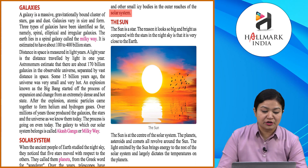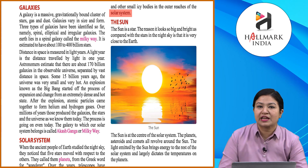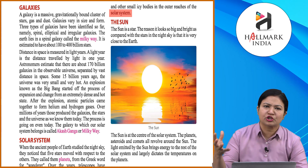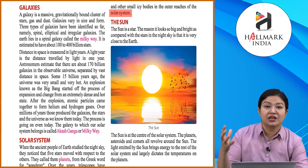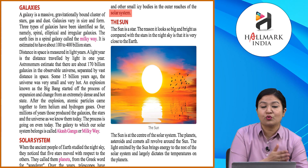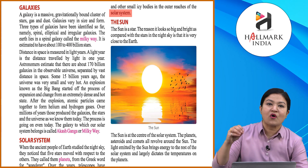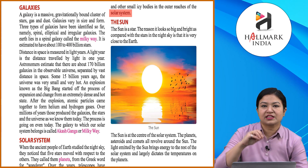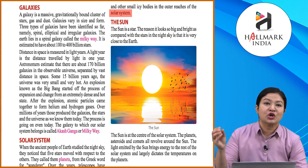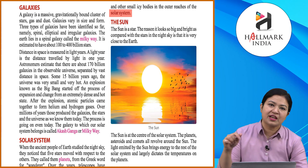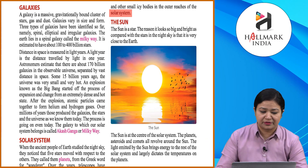Ancient people first noticed the Earth and its surroundings. Initially they could only see the Sun and Moon, but gradually they began to understand that these are part of a solar system, and that the Earth is accompanied by many other planets found within the galaxy.